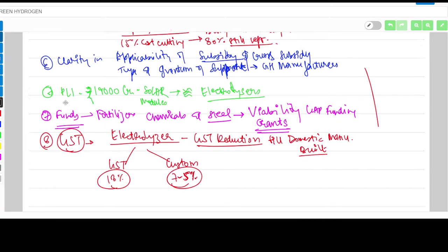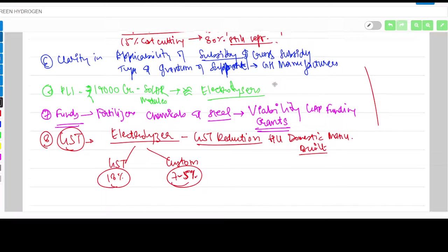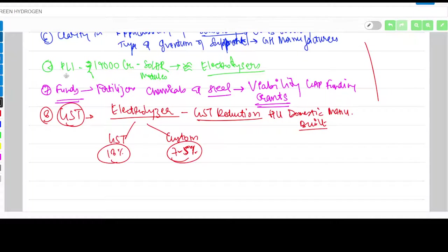Third is PLI schemes - Production Linked Incentive. The government previously gave this for solar modules worth about 19,000 crore. He suggests that electrolyzers used in green hydrogen production should also be put under PLI schemes.